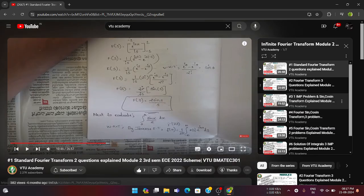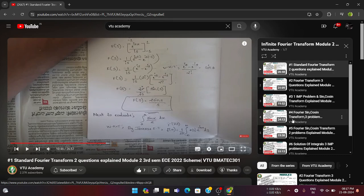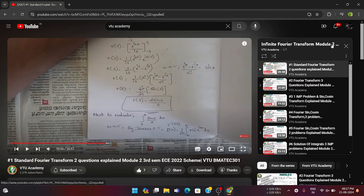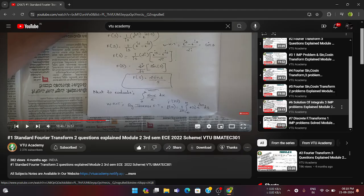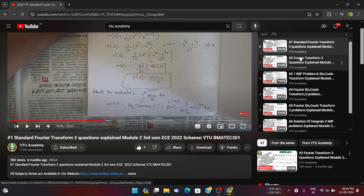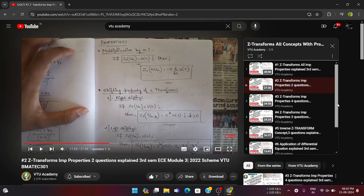Module 2 is about infinite Fourier transforms. One question is fixed from the Fourier sine or cosine transforms. You can refer to the fourth video of our infinite Fourier transform Module 2 playlist for sine and cosine transforms. Along with that, one question is fixed from the solution of integrals — that is the sixth video of this playlist. So before the exam, you need to learn these two things: one question from solution of integrals and one from Fourier sine and cosine transforms.